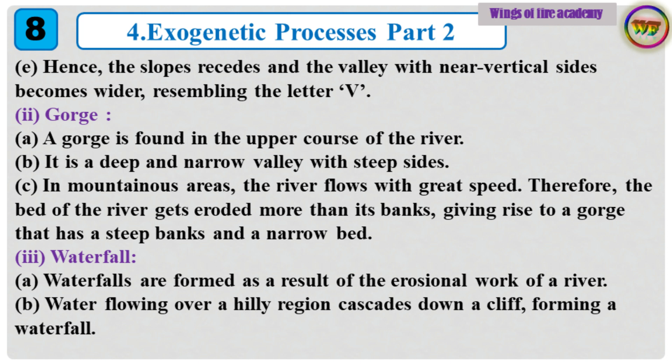2. Gorge. A gorge is found in the upper course of the river. It is a deep and narrow valley with steep sides. In mountainous areas, the river flows with great speed. Therefore, the bed of the river gets eroded more than its banks, giving rise to a gorge that has steep banks and a narrow bed.